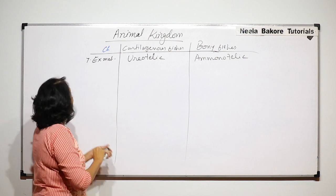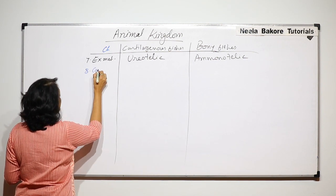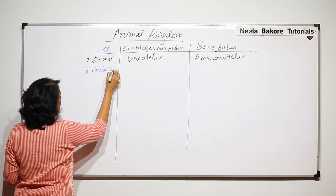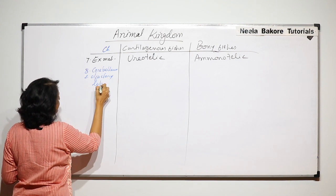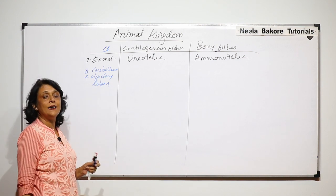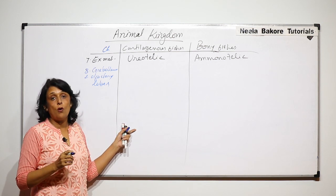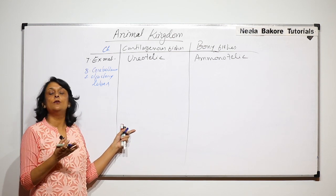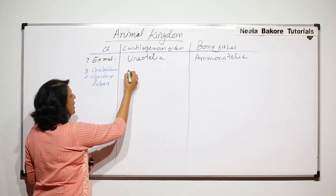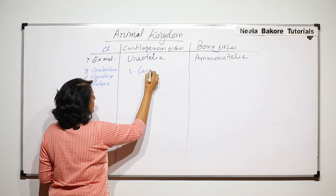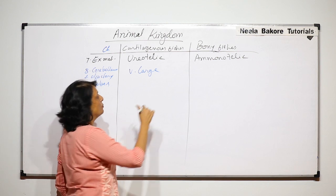The next comparison is on the brain, specifically the cerebellum and olfactory lobes. In cartilaginous fishes, because they depend more on equilibrium as they lack an air bladder, the cerebellum and olfactory lobes are very large. In bony fishes they are comparatively smaller.